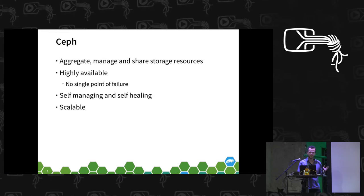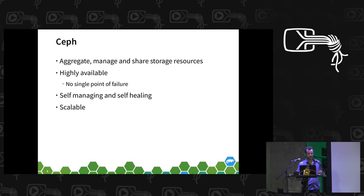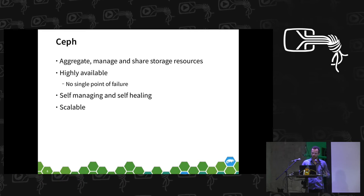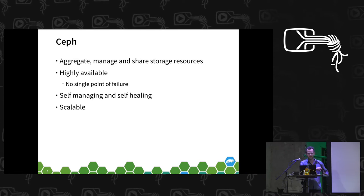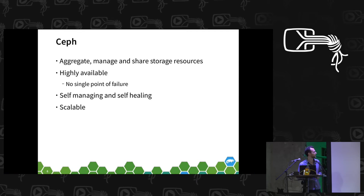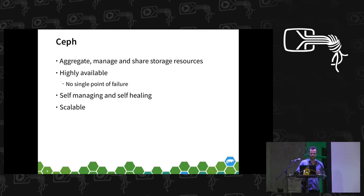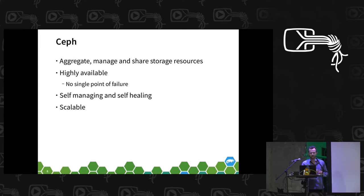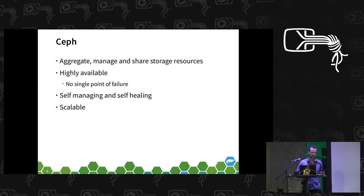Now on to Ceph. Hopefully most of you saw Owen's talk yesterday. Ceph is basically an amazing open source project which allows you to pool storage across a number of nodes, and that storage is then highly available — so if anything dies within those nodes, whether a power failure or a disk dies, you retain access to your storage. It's all open source, self-managing, self-healing in that if you have a failure it will reconstruct your data with the amount of redundancy you require. It's also incredibly scalable — you can store petabytes of information on Ceph.